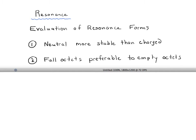So if you're comparing two resonance forms, one of them has a full octet and one of them has an atom without a full octet, then the one with the full octets is going to be more stable and going to make more of a contribution to the resonance hybrid.